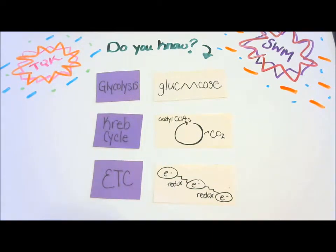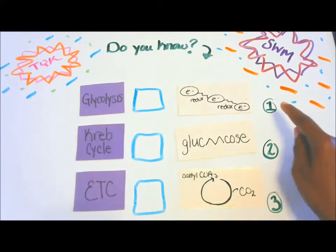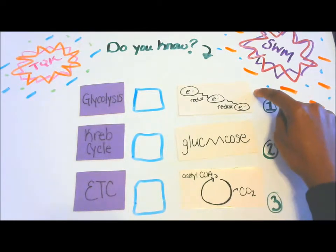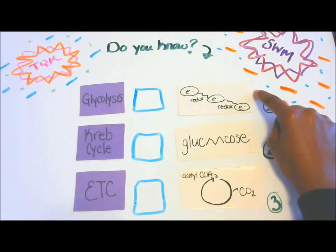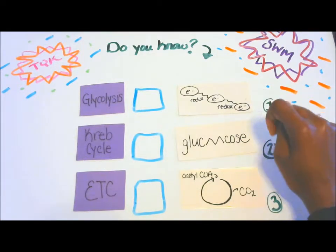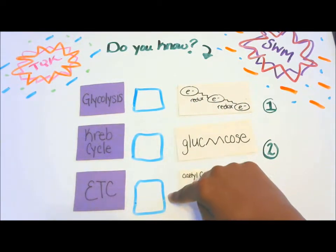I'm going to test your knowledge to see if you know your stuff. Number one: the cascade of redox reactions — FADH2 and NADH are used as electron carriers to generate ATP. Put number one in one of these three boxes.